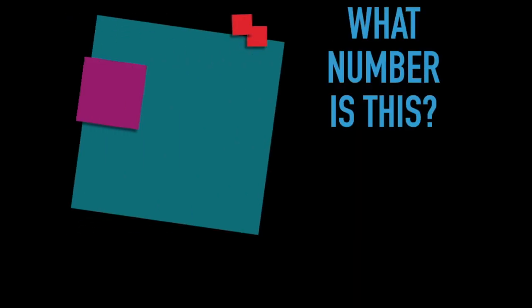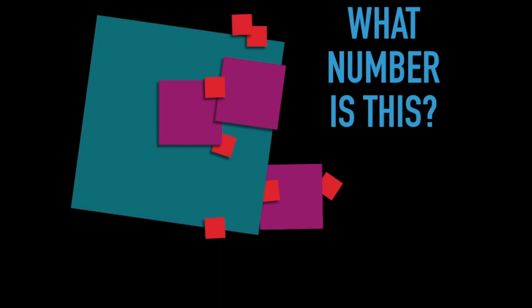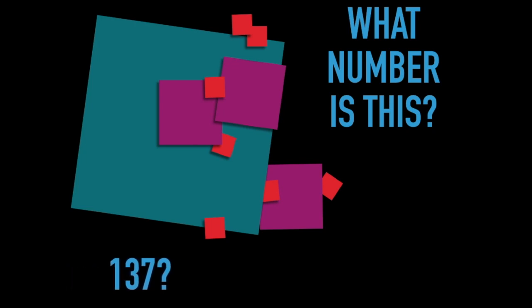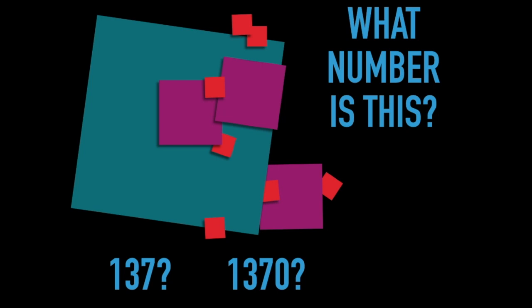So let's practice. Back to our system — what number do you think this is? It's similar to the one on your page. Write down your number or tell an elbow partner your guess. If you imagined the reds as ones, you might have thought this was 137. But if those reds were instead 10s, couldn't this have been 1370? And what if the green was actually a 1? Then we would have 1 and 37 hundredths.